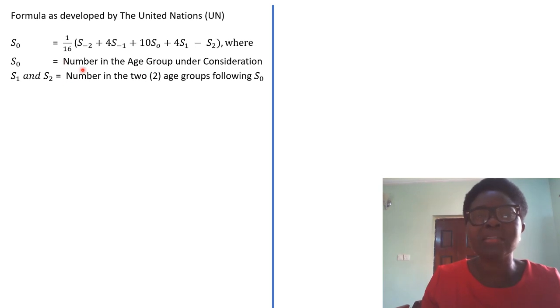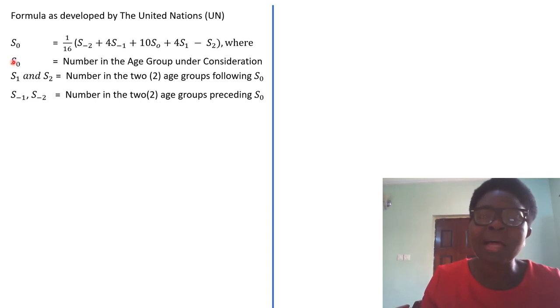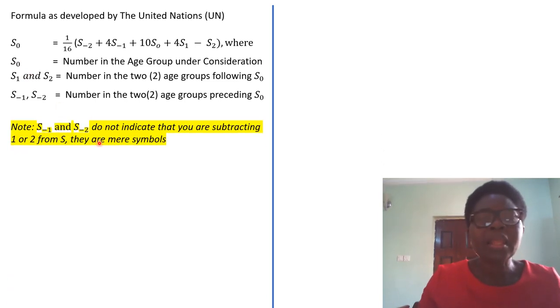Now we'll have S₁ and S₂. These are the number in the two age groups following the age group under consideration. When we do an example, I think it will be clearer to you. Then you have S₋₁ and S₋₂ as the subscripts. These are the number in the two age groups preceding the number under consideration. So we're going to look at how it works.